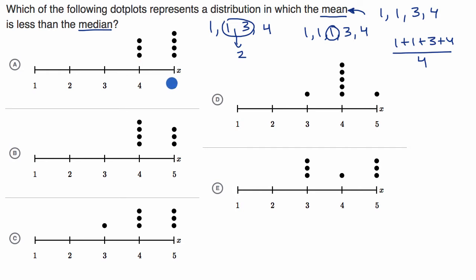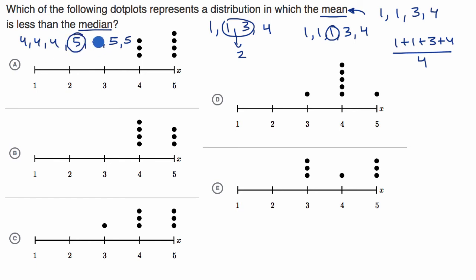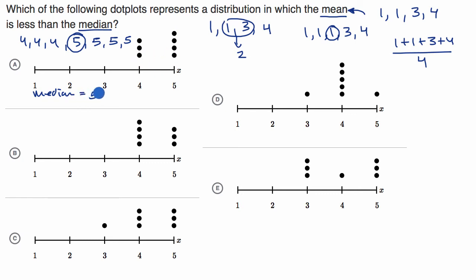Let's look at choice A. This tells us we have three fours and four fives. So we have: four, four, four, five, five, five, five. These are in order, so the middle number — with three numbers on either side — is this five right here. So the median is five. Now for the mean: you have some fours and some fives, so the mean is going to be between four and five, a little closer to five since there are more fives, but still less than five. So the mean is less than the median. This is a distribution where the mean is less than the median — I would choose this one.